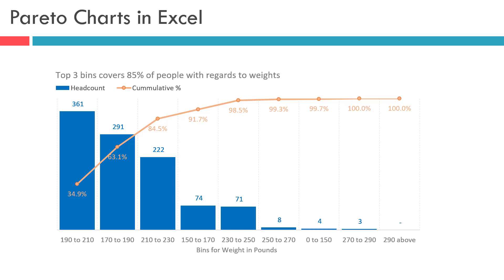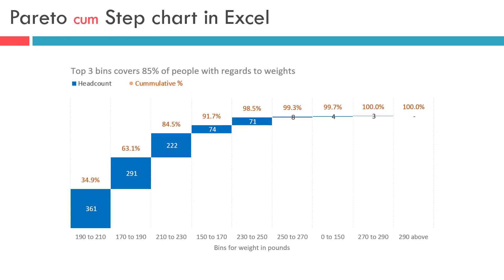Now let us look at an alternative presentation for the same dataset. Here on screen, you can see that we have presented the headcount data just like the steps in a building moving upwards. The headcount for each bin is shown above the total headcount of the previous bin. We have also presented the cumulative percentage for people up to that bin. Sometimes reading a column and line chart together creates confusion for a reader, so this chart can be suitable for such an audience.